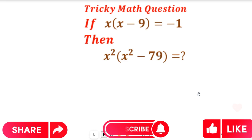We're going to look at the first equation. We are told that if the first equation is equal to negative one, then what will the second equation be? From the first equation, we are told that x multiplied by x minus nine is equal to negative one.